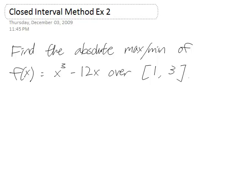We want to find the absolute max and the absolute min of this function, x cubed minus 12x over the closed interval [1, 3]. This is a polynomial, so it's a continuous function. That means we can use the closed interval method.